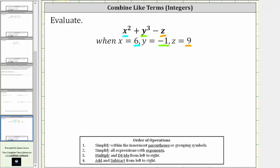So performing the substitution, when we substitute six for x, we have six squared, plus when we substitute negative one for y, we have the cube of negative one, and then substituting nine for z, we have minus nine.